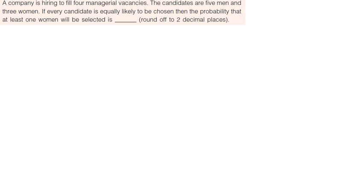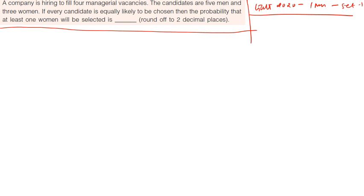So next question, this question is from probability and it's been asked in GATE 2020 for one mark in set one. A company is hiring to fill four vacancies. The candidates are five men and three women. If every candidate is equally likely to be chosen, then the probability that at least one woman will be selected.